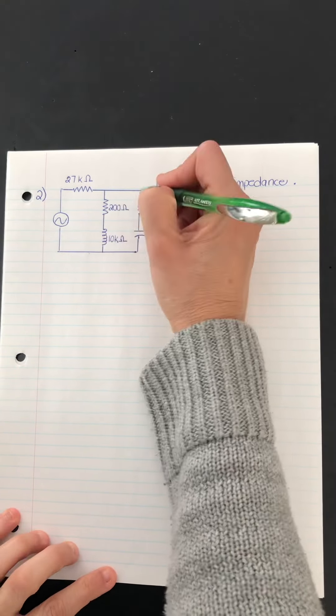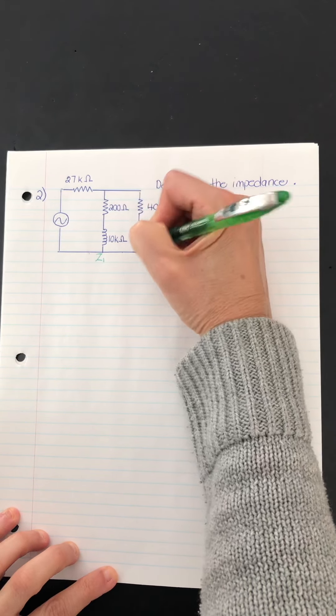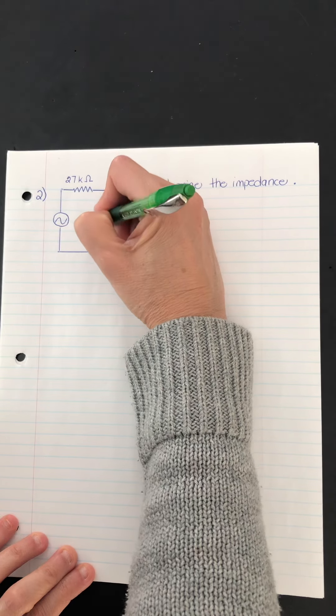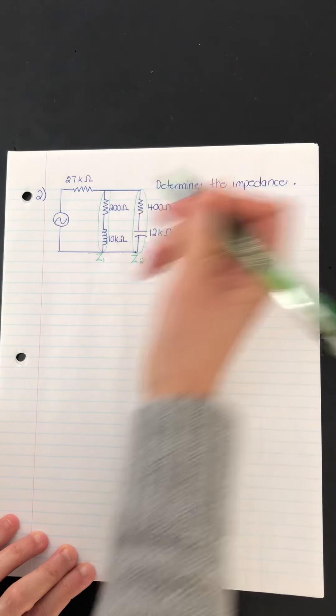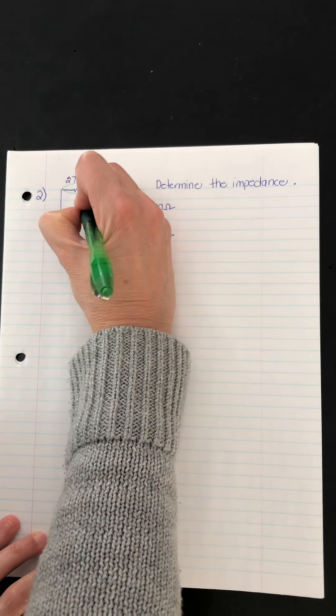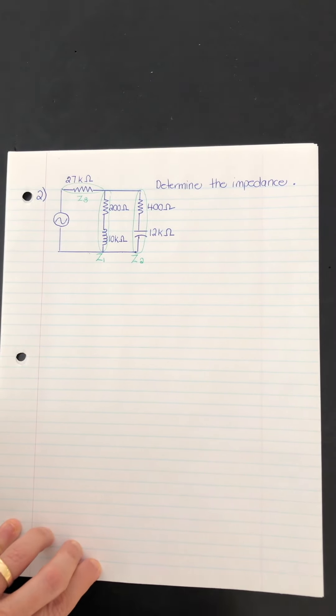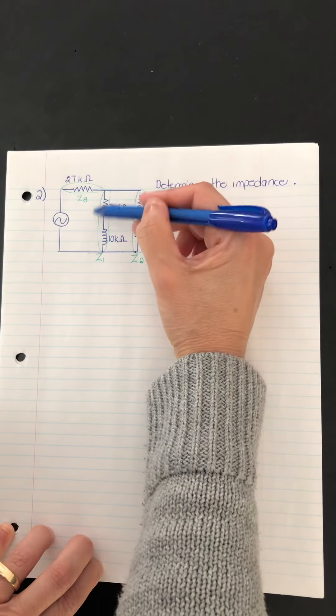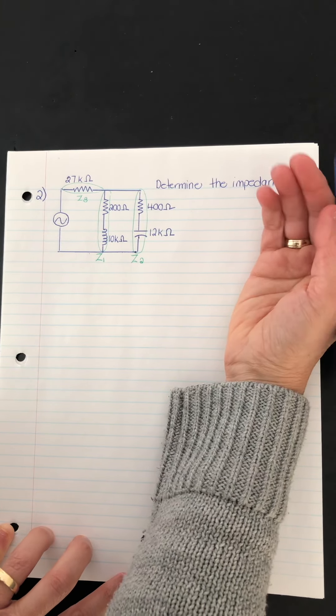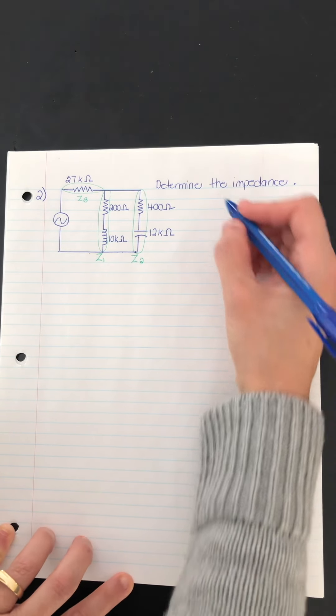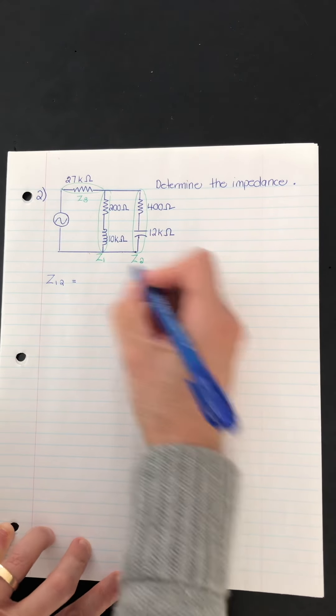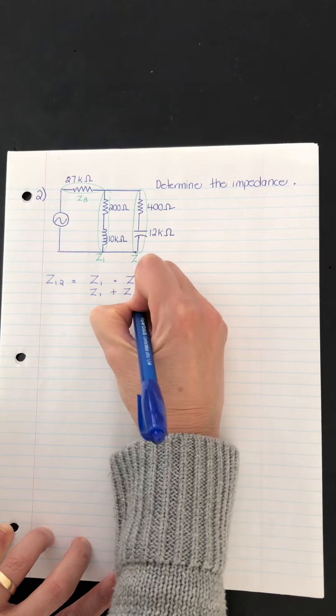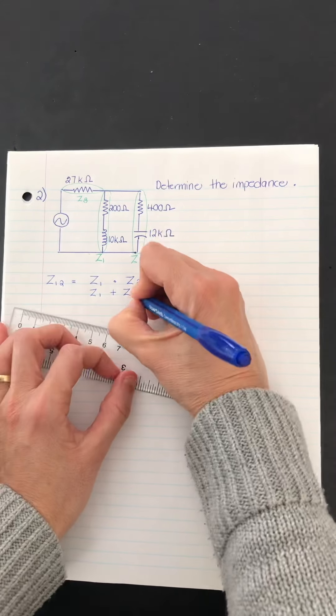So I'm going to label my branches. So I'm going to just say this one right here is Z1. Here is Z2 and then this one here containing only the resistor. I'm going to call that Z3. So what we're going to do is calculate first the combined results here, which I'm going to call Z12 maybe. So Z12 is found by taking Z1 and multiplying it by Z2 and dividing by the sum of Z1 and Z2.